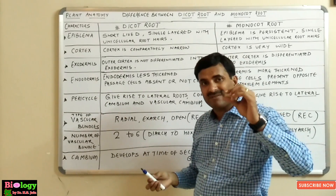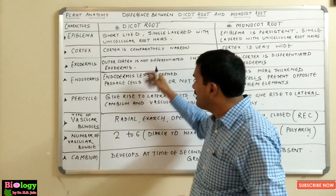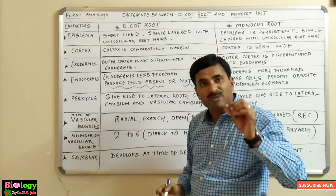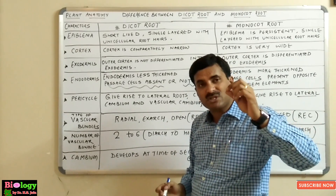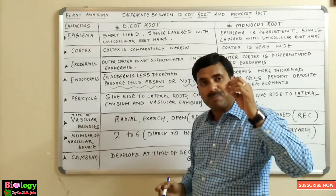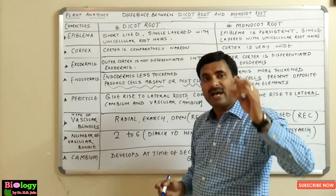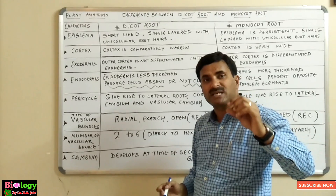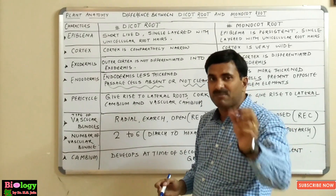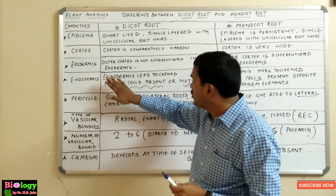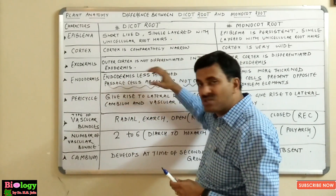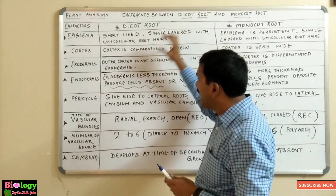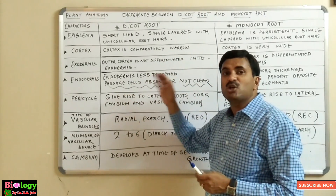In the dicot root, the endodermis is less thickened — less deposition of lignin and suberin occurs. The passage cells, which are the cells meant for entry of water where Casparian strips are absent, are absent or not clear in the dicot root. Passage cells are always present just opposite to the protoxylem elements.